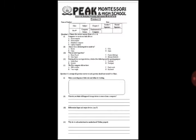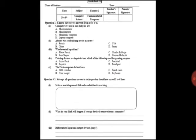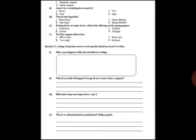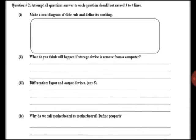Now we have a number of worksheets here. In first worksheet, you can see there are multiple choices. You will solve these multiple choices. In question number two, there are four parts. In the first part, you will make a neat diagram of slide rule and define its working.